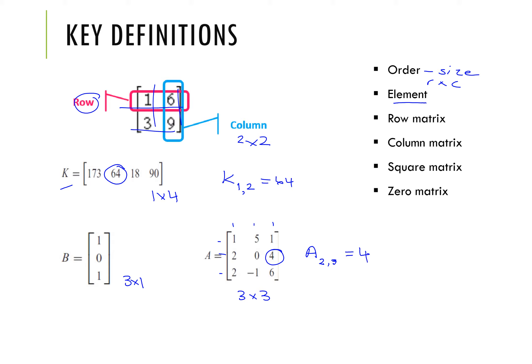A row matrix is a matrix that contains only one row — K is an example of a row matrix. A column matrix has a single column, and B is an example of that. A square matrix has the same number of rows and columns, so A is an example of a square matrix — it's a three by three square.